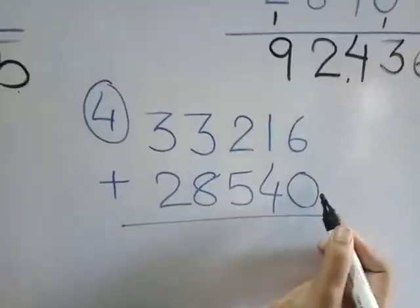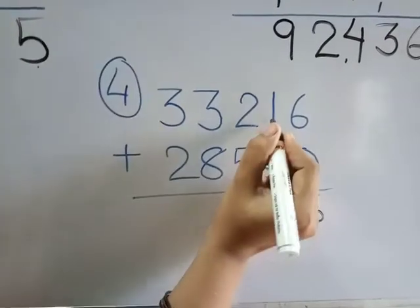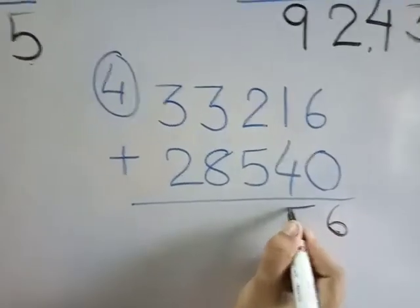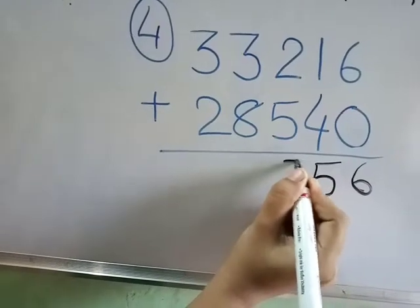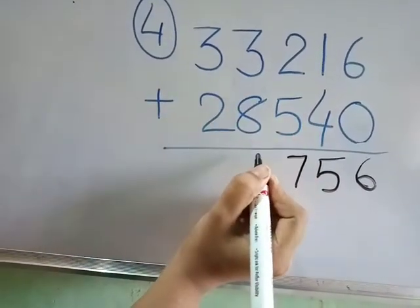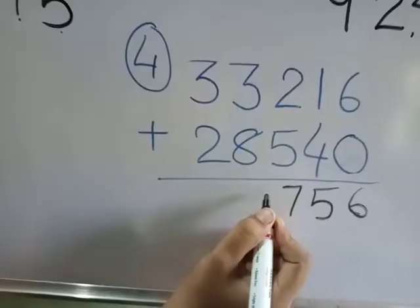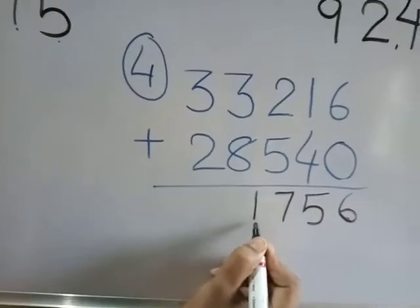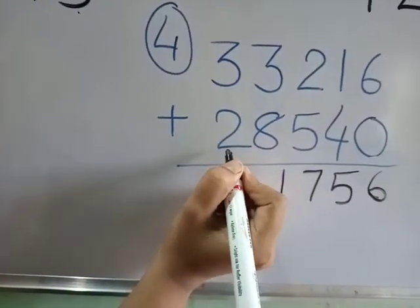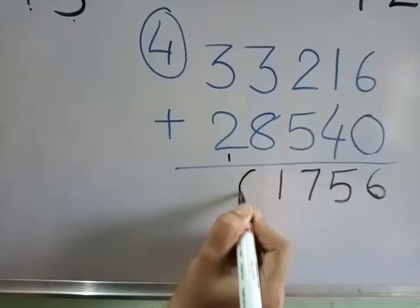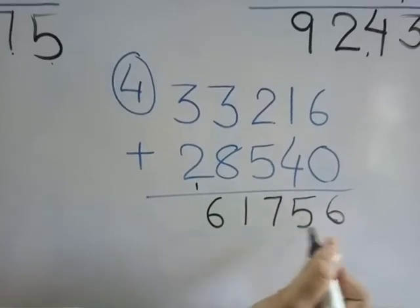Six plus zero is equal to six. One plus four is five. Two plus five is seven. Three plus eight — one is right here and one is carry. Three plus two is equal to five, five plus carry one is six. Now the answer is sixty-one thousand, seven hundred fifty-six.